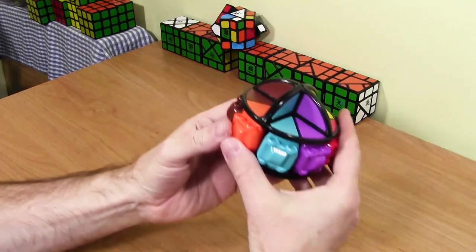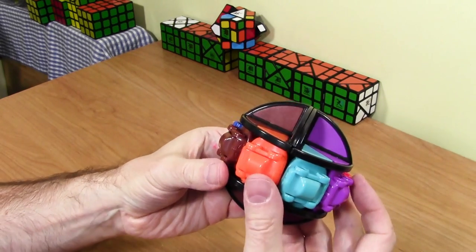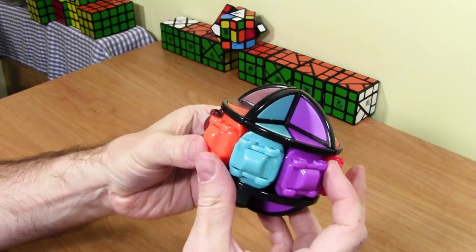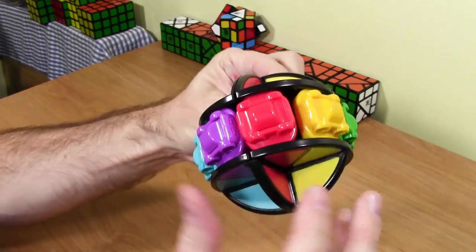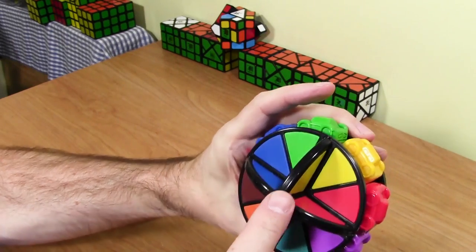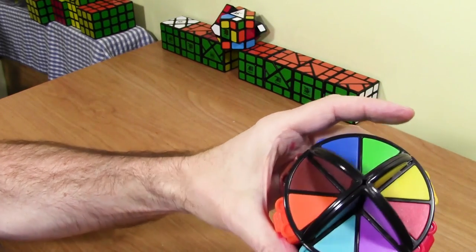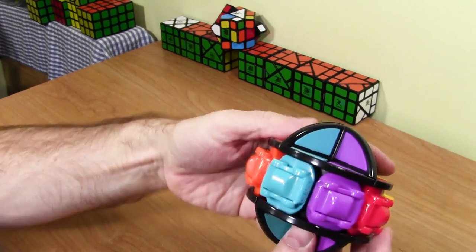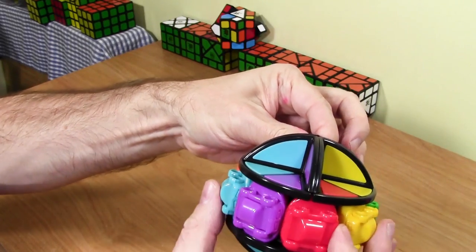So this is it. This is the Turbo Mind Twister. See nice bright colors. It looks like a whole bunch of colors. What's that? Eight different colors on it. Wow. So I guess these cars move. Oh, yeah, they do.